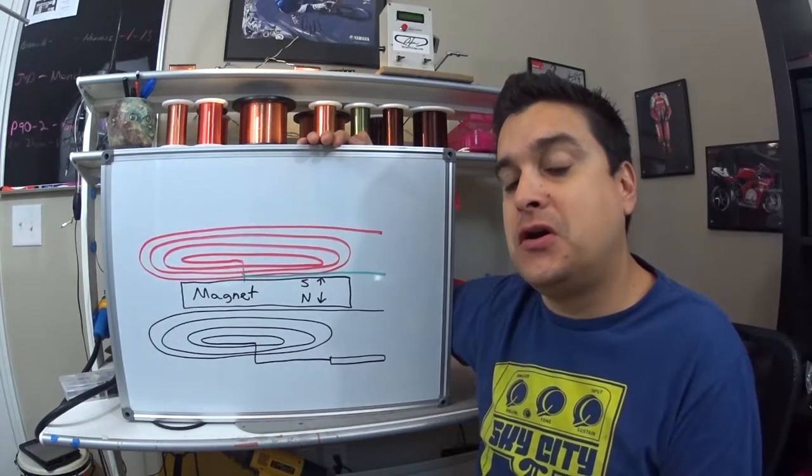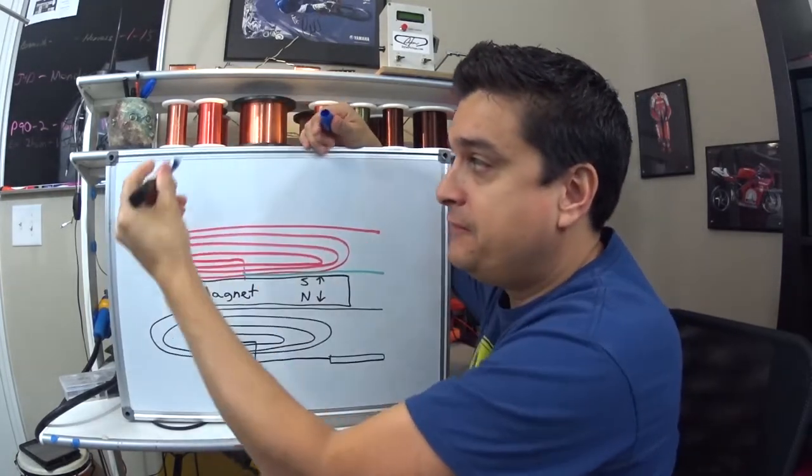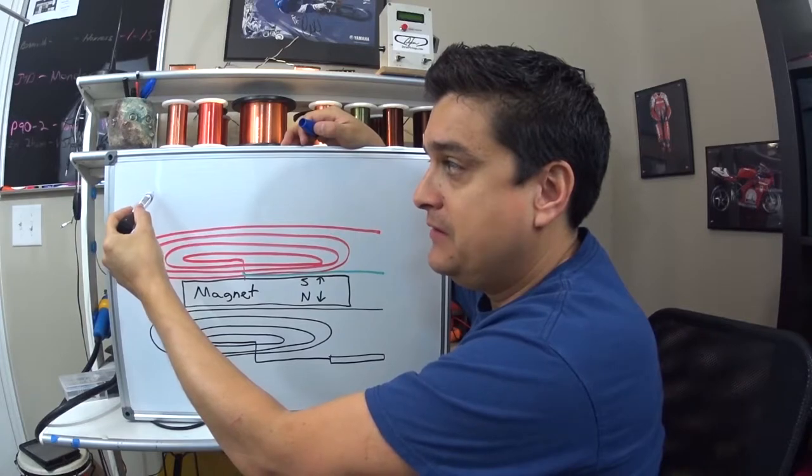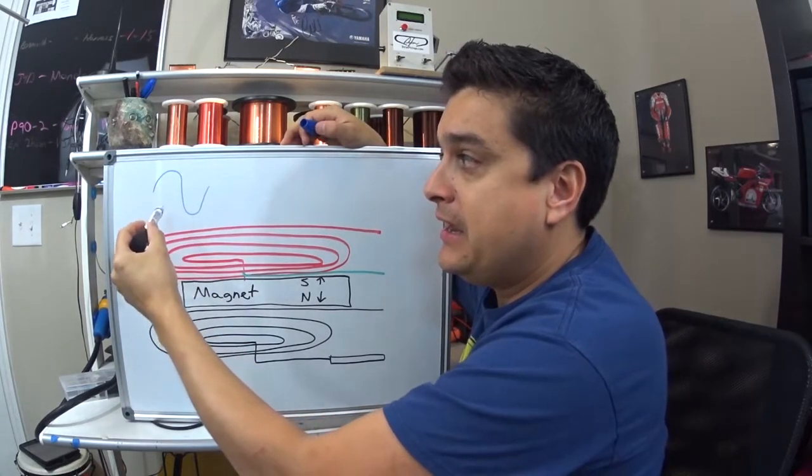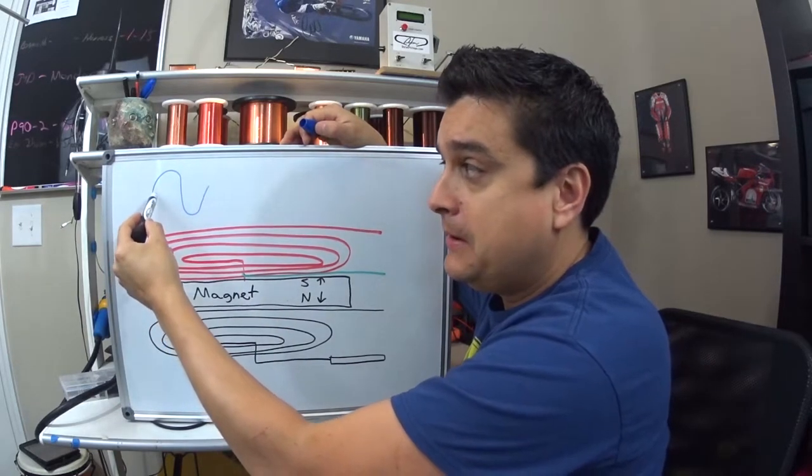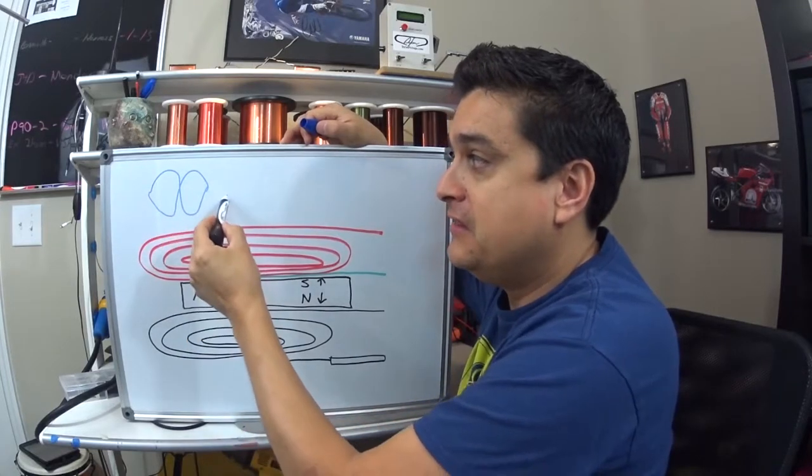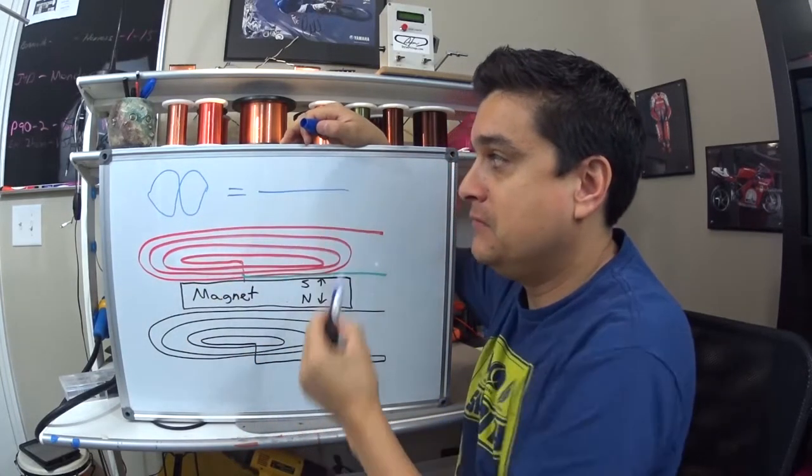So we need to figure out how to cancel that hum. Now if we go back to our other blog about phasing, we know that if we take one frequency, in this case it's 60 hertz hum, and we can run that same frequency out of phase with itself like this, then that becomes no sound.